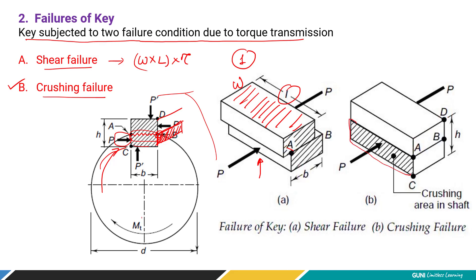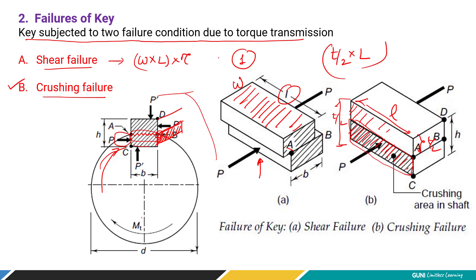The figure depicts the crushing failure of the key. The half portion placed in the shaft material is going to crush — or you can consider the half portion in the hub material. The area for crushing failure is thickness/2 times length. These are the areas used in the shear failure and crushing failure equations.